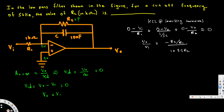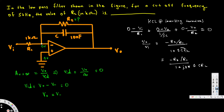If we simplify, we get: minus R2 over R1, times 1 over (1 plus s·C·R2). We can then convert this to the phasor domain. The bottom part becomes (1 plus j·2π·f·C·R2), because in the phasor domain s is equivalent to j·omega, and omega equals 2π·f. That's how we arrive at this expression.